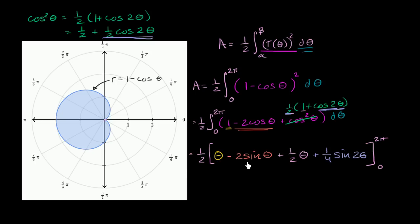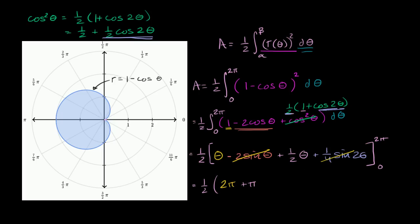When you evaluate at θ = 0, every term is just zero, which simplifies things nicely. So we just take one half of the expression evaluated at 2π: one half times [2π + 0 + ½(2π) + 0] = one half times [2π + π] = one half times 3π = 3π/2. That is the area of this region.